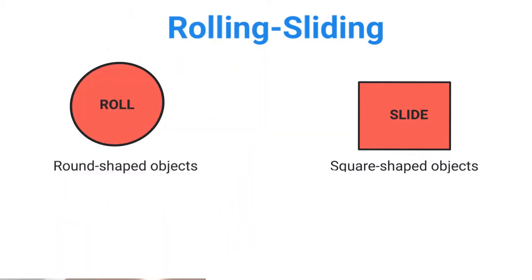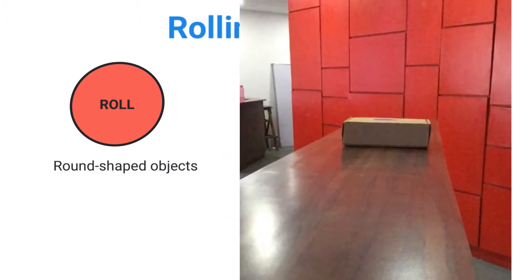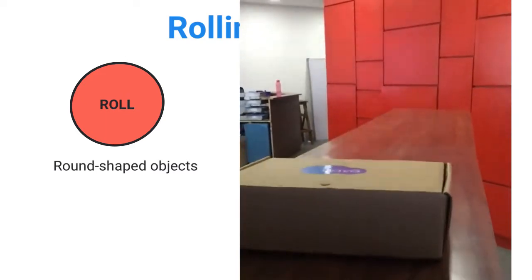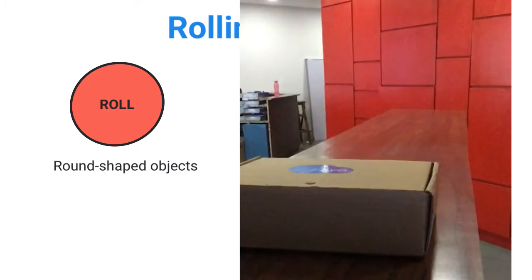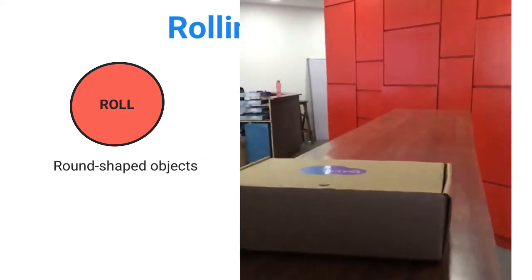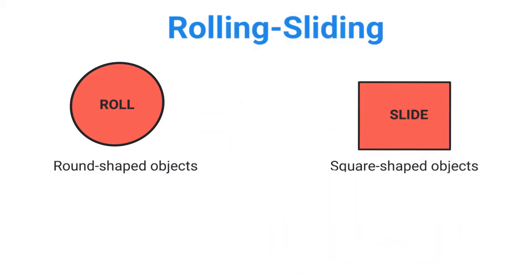Now that you have seen what rolling looks like, let's take a look at how square shaped objects slide. In this video you can see that the object is square shaped. Square shaped objects slide. Watch how this box slides across the table. Let's watch it one more time. It did not roll — it was sliding.